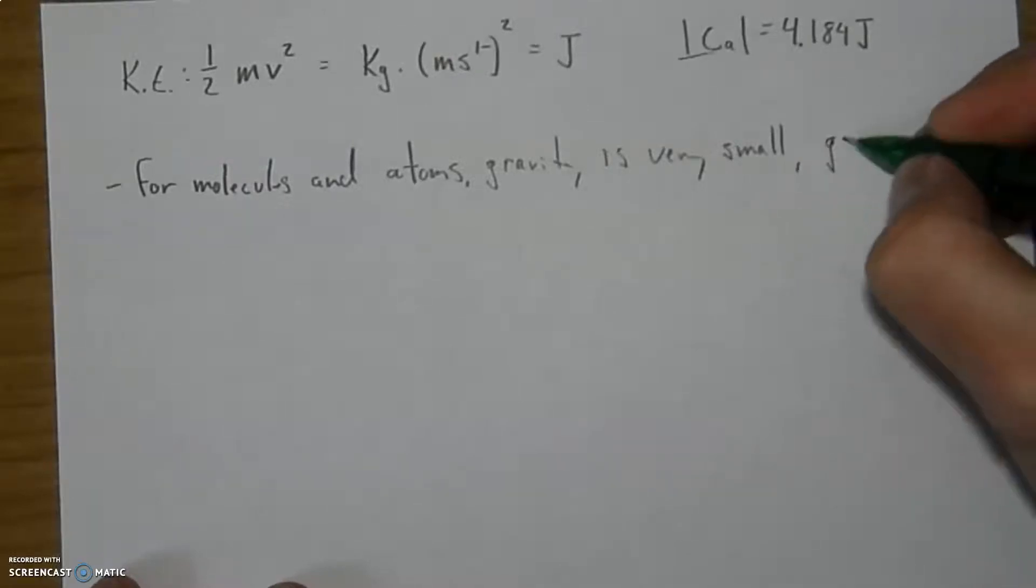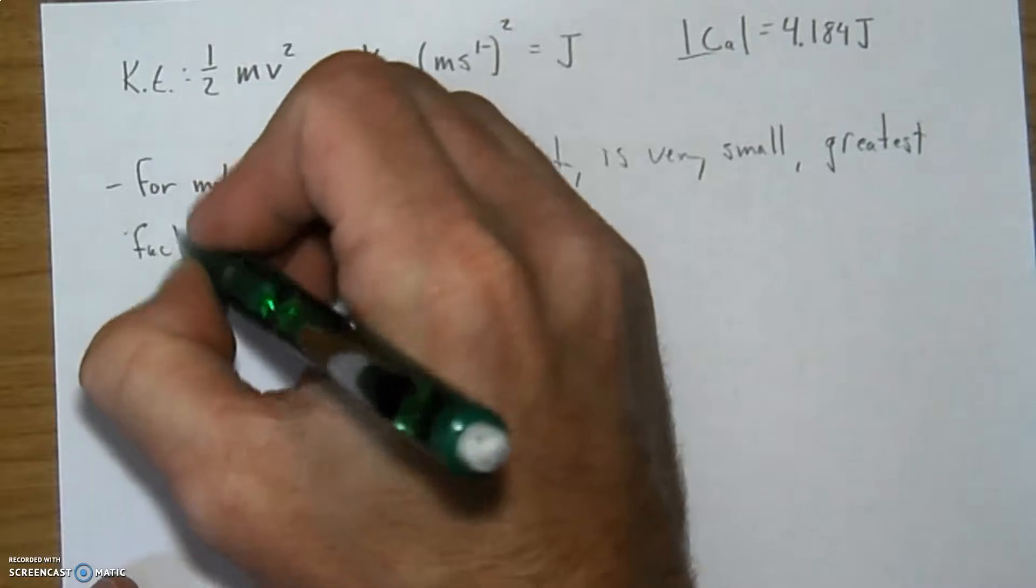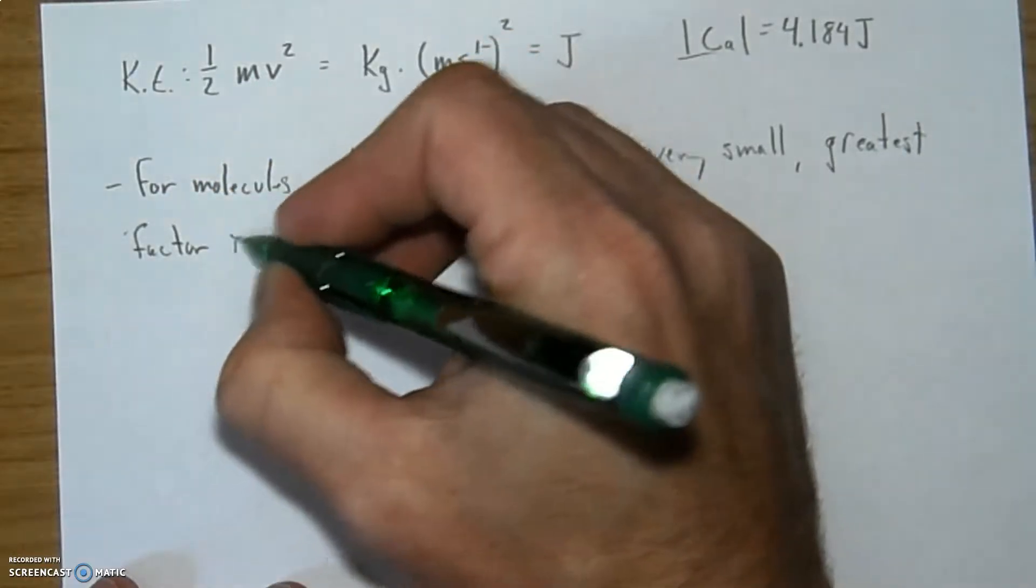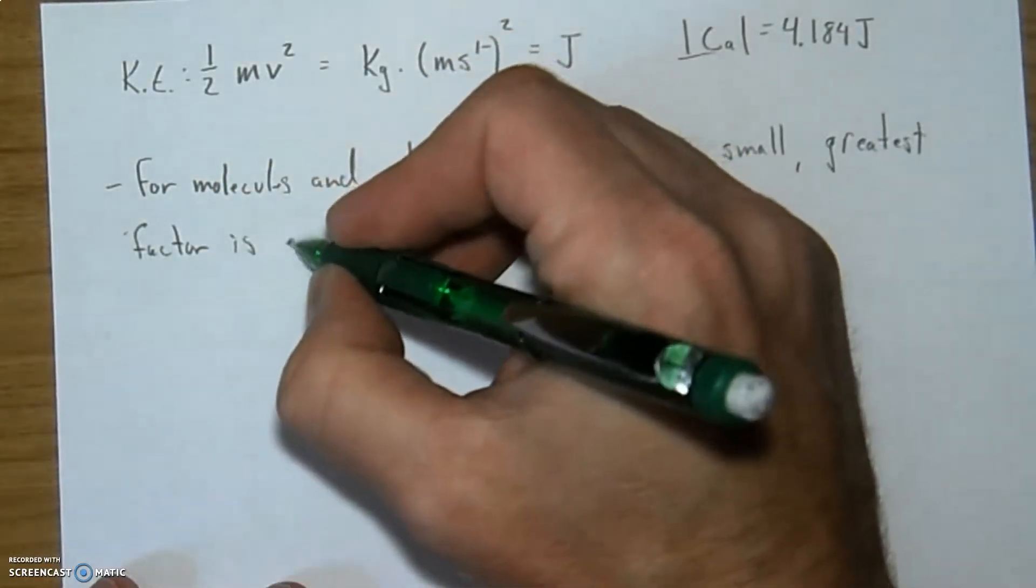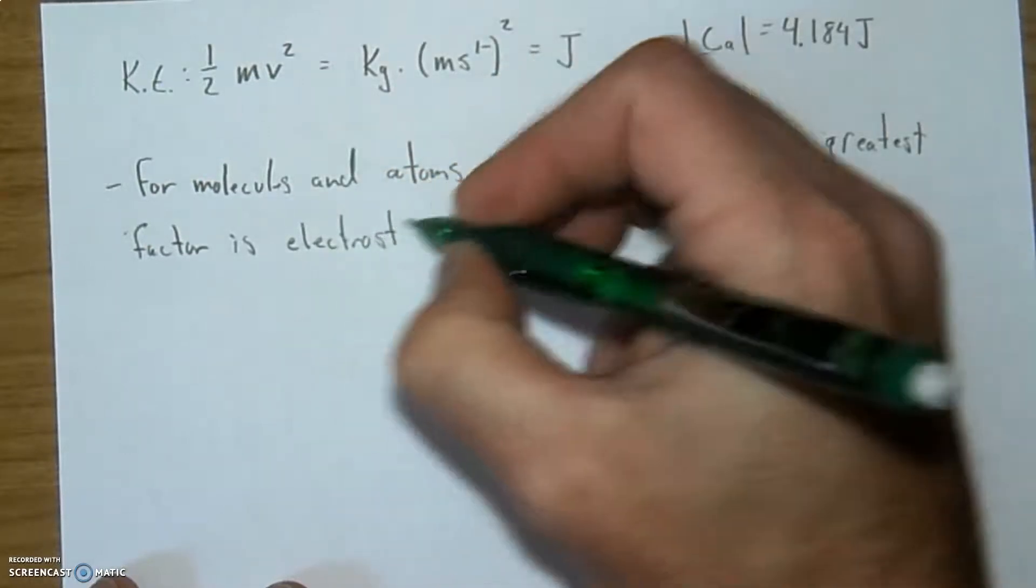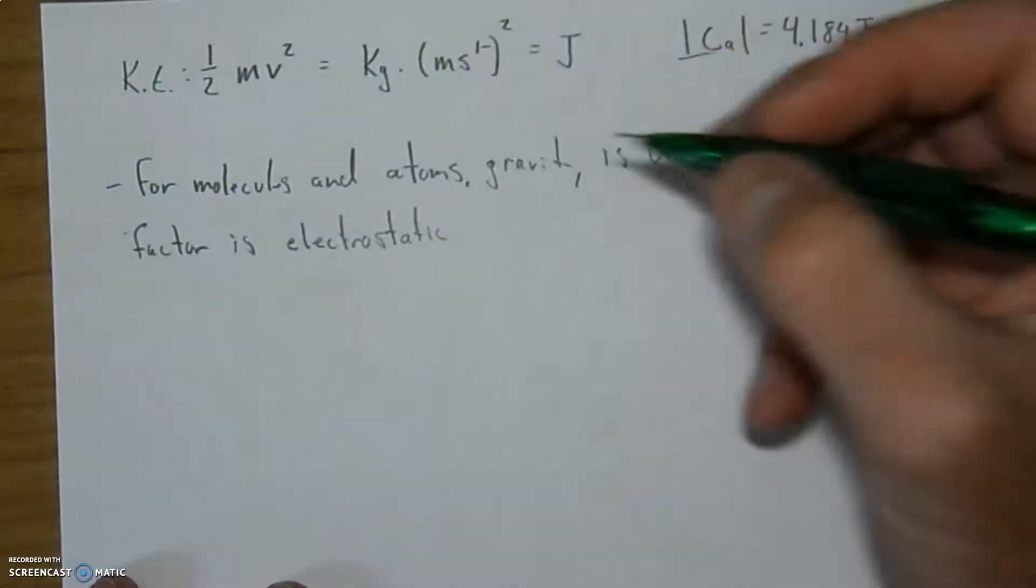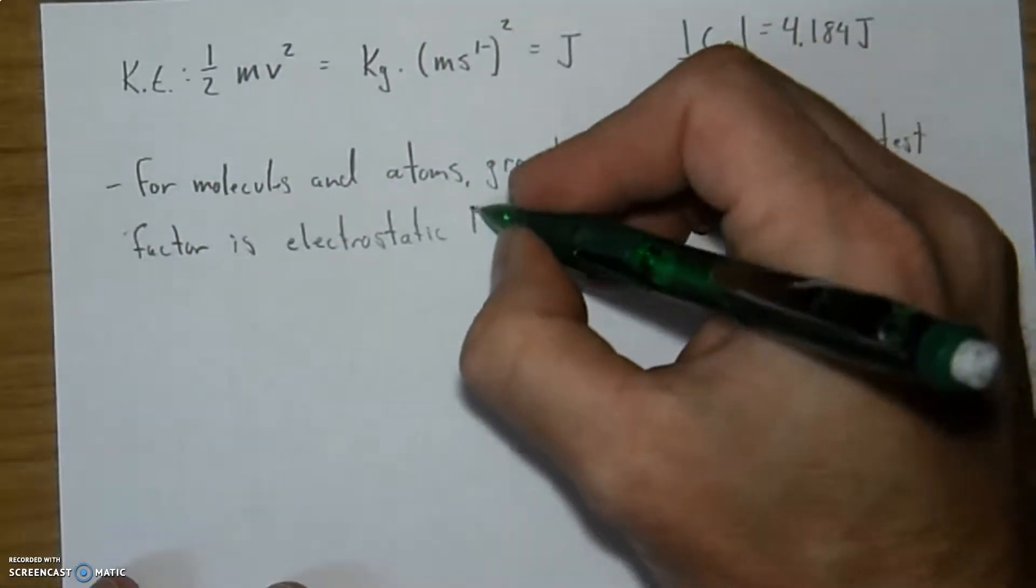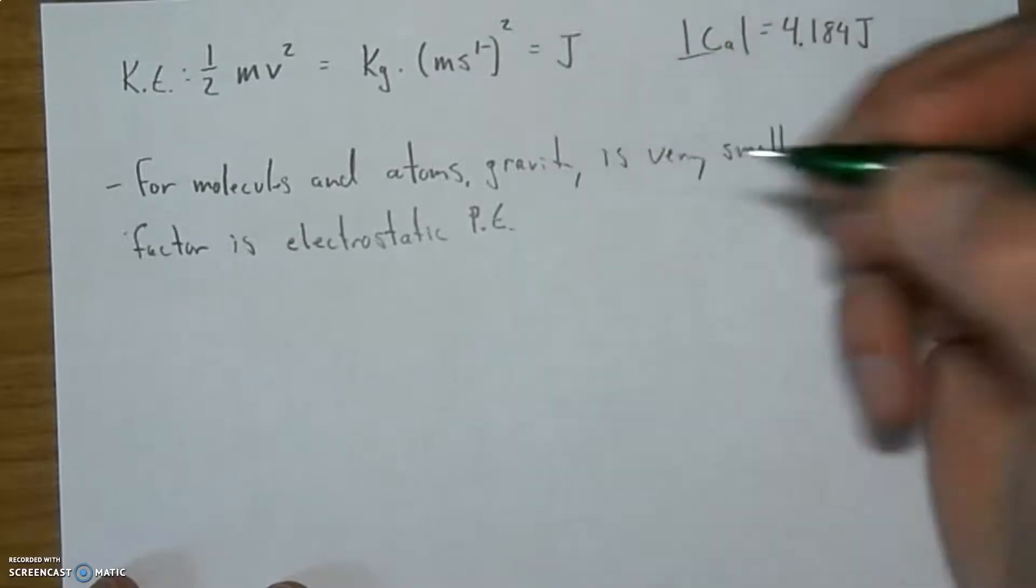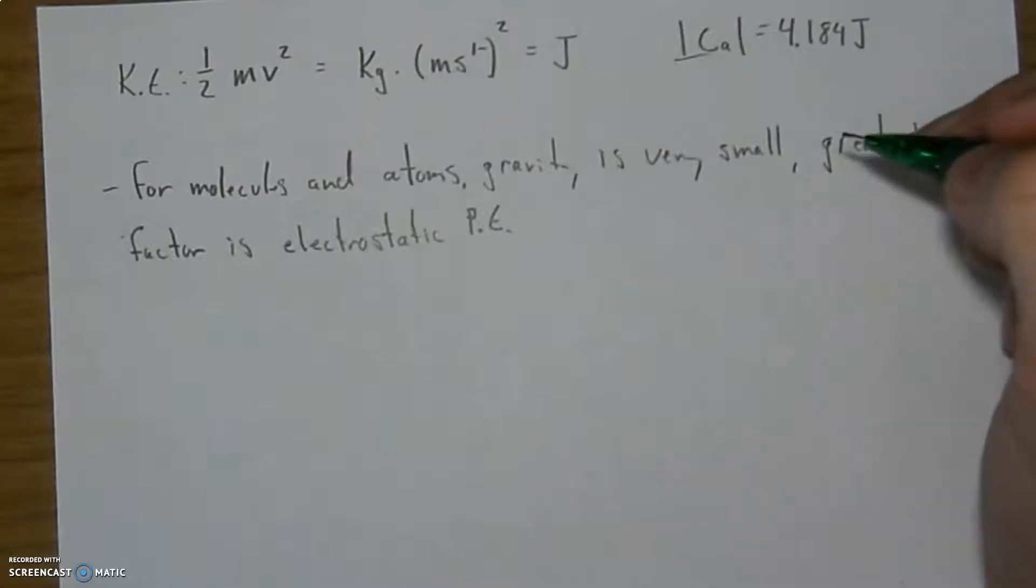As far as how these things relate or attract to each other, the greatest factor for them is something we call electrostatic. Their attraction is electrostatic. And it is the potential energy that they may have for each other. So think of like charges, plus one, minus one, plus two, minus two. That's what we get into.